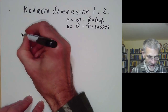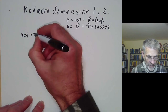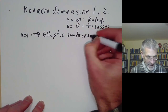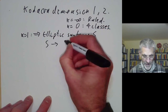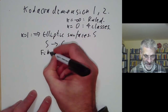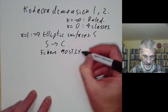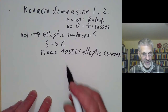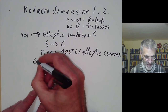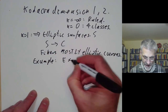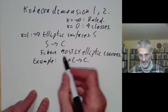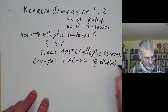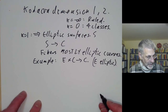Kodaira dimension 1 surfaces all turn out to be elliptic surfaces. An elliptic surface is a surface S with a map to a curve C such that the fibres are mostly elliptic curves. I will explain what 'mostly' means later, as some of the fibres aren't elliptic curves. A typical example is a map from E times C to a curve C, where the fibres are all copies of the elliptic curve E.